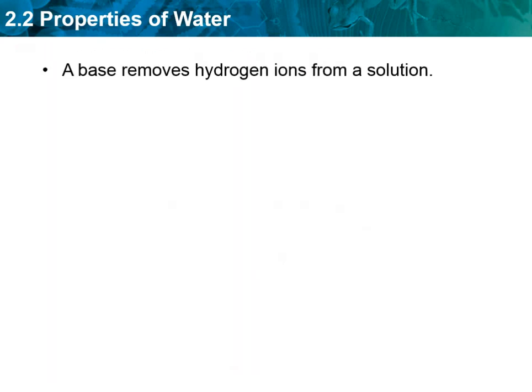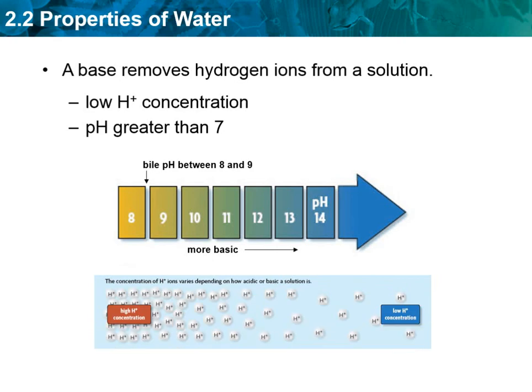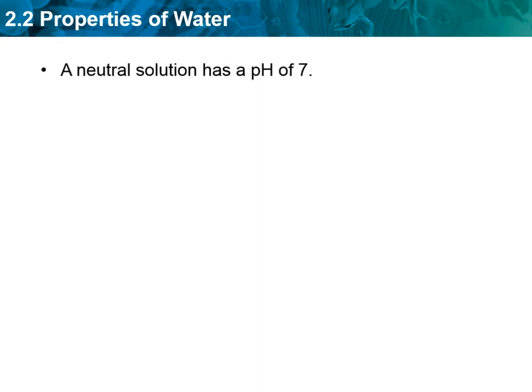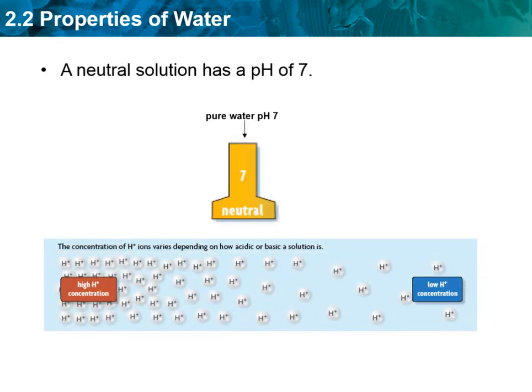Bases are going to remove hydrogen ions from a solution. They will have a low hydrogen ion concentration and a high OH (hydroxyl) concentration. Anything with a pH greater than seven is considered a base. With bases, if you get them on your skin they're going to feel slippery — things like soap would be in the base category. A neutral solution has a pH of seven, and pure water is neutral.